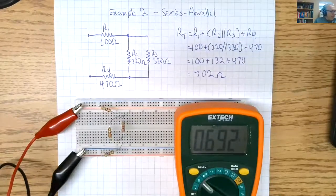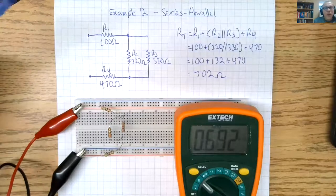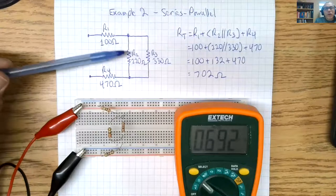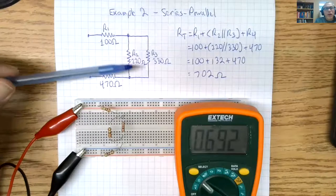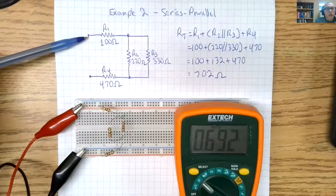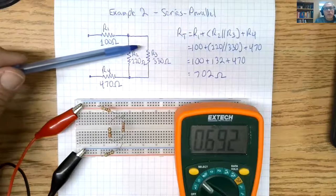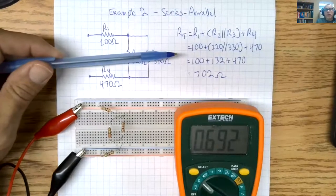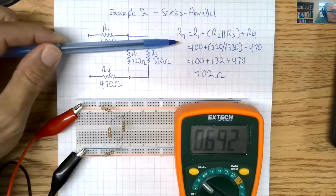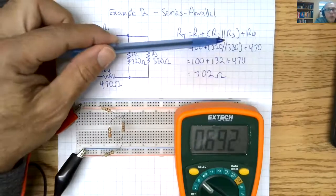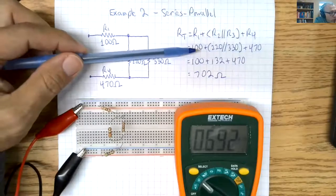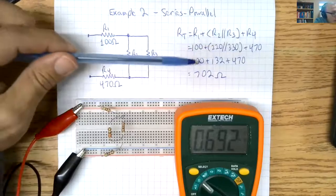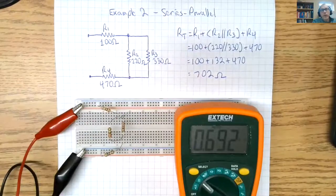In our next example, I have R2 in parallel with R3 and this network of R2, R3 is in series with R1 and in series with R4. So our current path would be R1 divvied up among R2 and R3 and it comes back together to R4. So my formula for RT would be R1 plus R2 in parallel with R3 plus R4. So it's 100 plus the 220s in parallel with 330 plus 470. And I would get my total of 702 ohms.